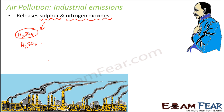Nitrogen dioxides are also very harmful. Their primary source is the burning of fossil fuels — for example, when coal, oil, gas, or diesel are burned at very high temperatures, nitrogen dioxides are released. Nitrogen dioxide very easily mixes with particles in the air. If this polluted air is inhaled, it can cause coughing, affect the lungs, and can even cause asthma or other respiratory infections.